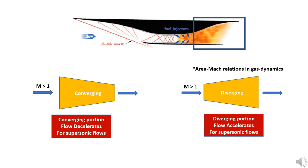Supersonic flows accelerate in diverging sections and slow down in converging sections, which is opposite of the regular subsonic flows which we experience in daily life.